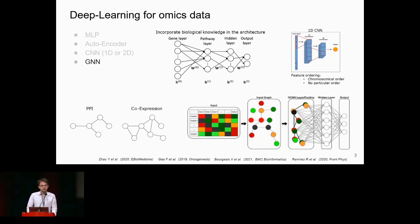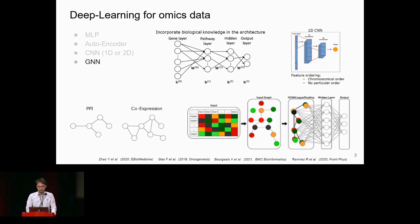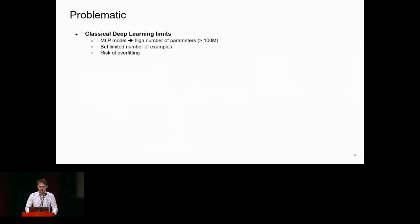The last widely used architecture is graph neural networks. In biology, much knowledge can be represented as a graph — you could use a protein-protein interaction graph or co-expression graph. Each node represents a gene, and when you have the expression vector of a patient, you map those expression values onto the graph and perform graph convolution to aggregate information from neighboring nodes before the final prediction.